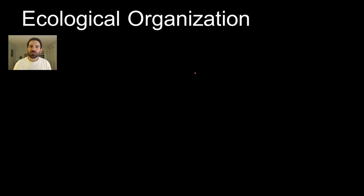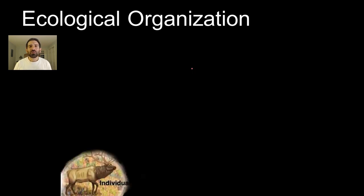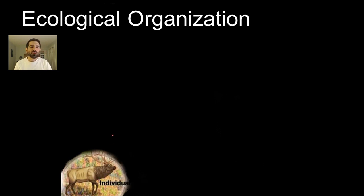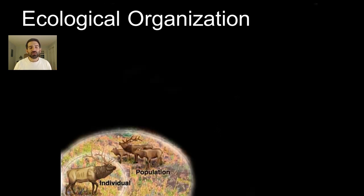We also like to organize ecosystems. So let's start with a 500-pound herbivore that lives in the Rocky Mountains or Northern Canada — it's an elk. It's one individual. We're going to zoom out and include more of this elk's home. The first level is population: all of the elk in one area, and the key is that it has to be just one species.